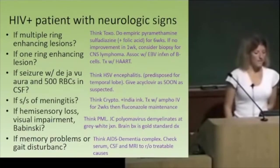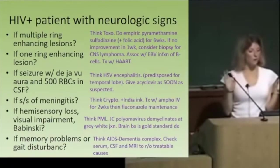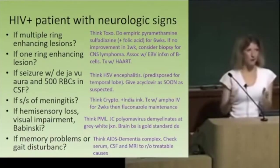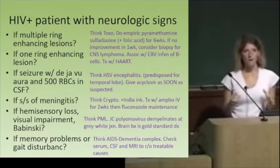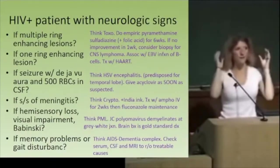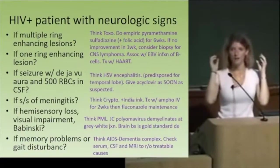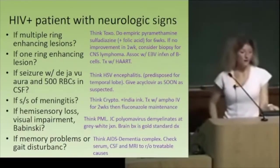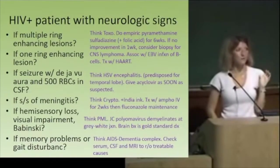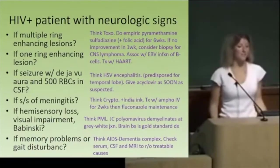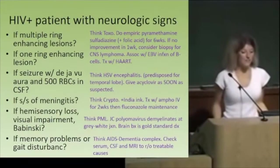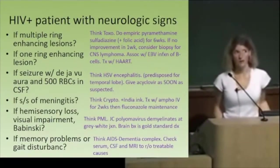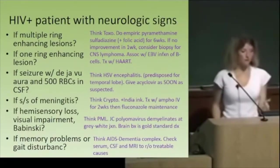If an HIV patient has a seizure with a déjà vu aura and CSF shows 500 RBCs, that points to HSV encephalitis — déjà vu aura means temporal lobe origin, and HSV goes to the temporal lobe with slightly hemorrhagic CSF. Treat with acyclovir ASAP; don't wait for viral culture or EEG.